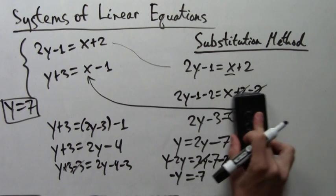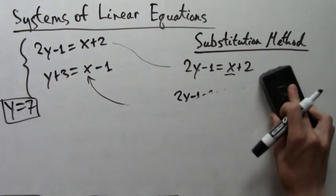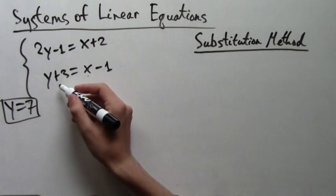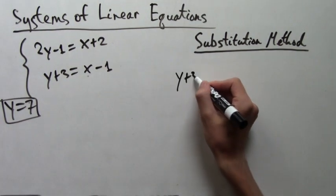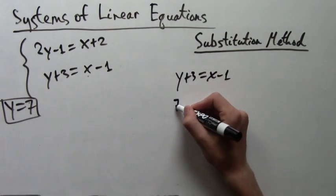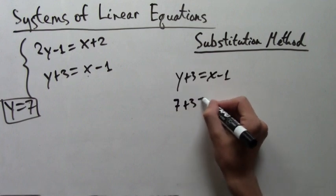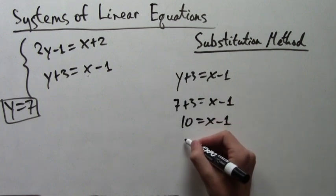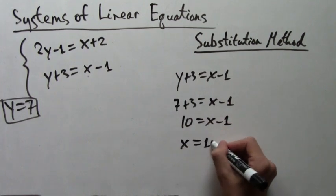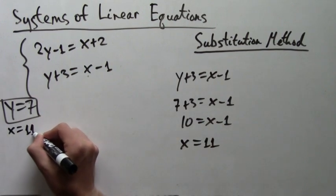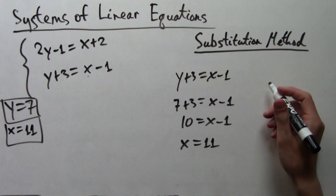Well, that's actually pretty easy now. So we can just plug y into one of the equations and simplify. So for example, we know that y plus 3 equals x minus 1 from the second equation. If we plug in 7 instead of y, you get 7 plus 3 equals x minus 1. Well, this solves pretty easily for just x equals 11. So we know that the solution to this system of equations is x equals 11 and y equals 7.